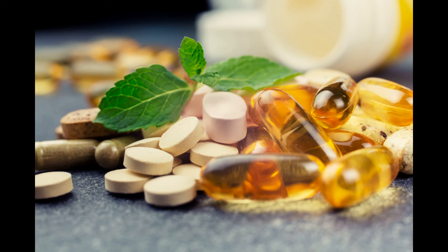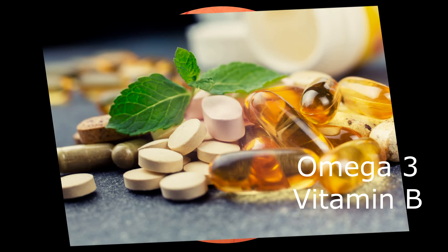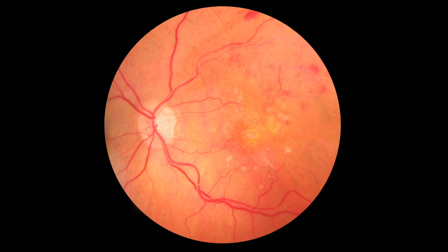Remember that even if sugar levels are well controlled, diabetes will still continue to affect the vessels, but this should be delayed as much as possible. The third and final way is by use of supplements. Supplements containing omega-3, vitamin B complex, and other vitamins have been known to delay diabetic retinopathy by protecting the eye from free radicals and preventing macular and retinal damage. Of course, these should preferably be taken well before complications occur.